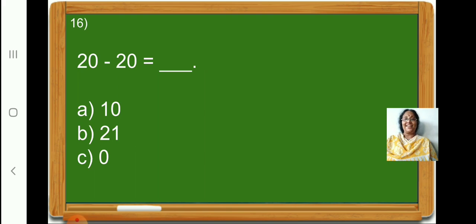Again, here we have a subtraction sum. 20 minus 20. Children, first subtract the numbers in the 1's place. 0 minus 0 is 0. Now, let us subtract the numbers in the 10's place. 2 minus 2 is 0. Therefore, 20 minus 20 is equal to 0. Therefore, put a tick on option C, 0.